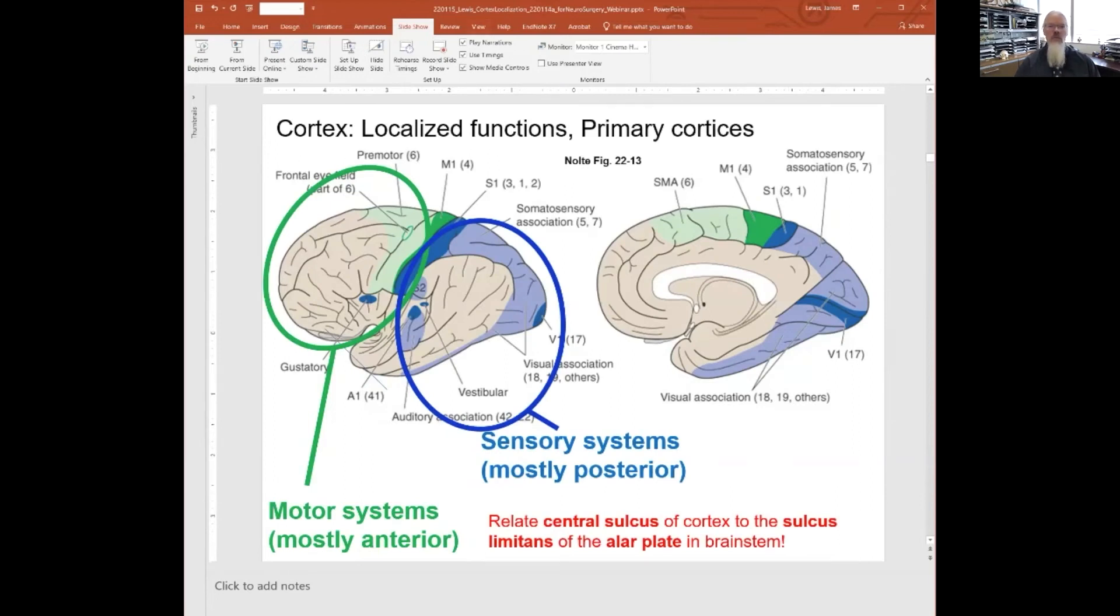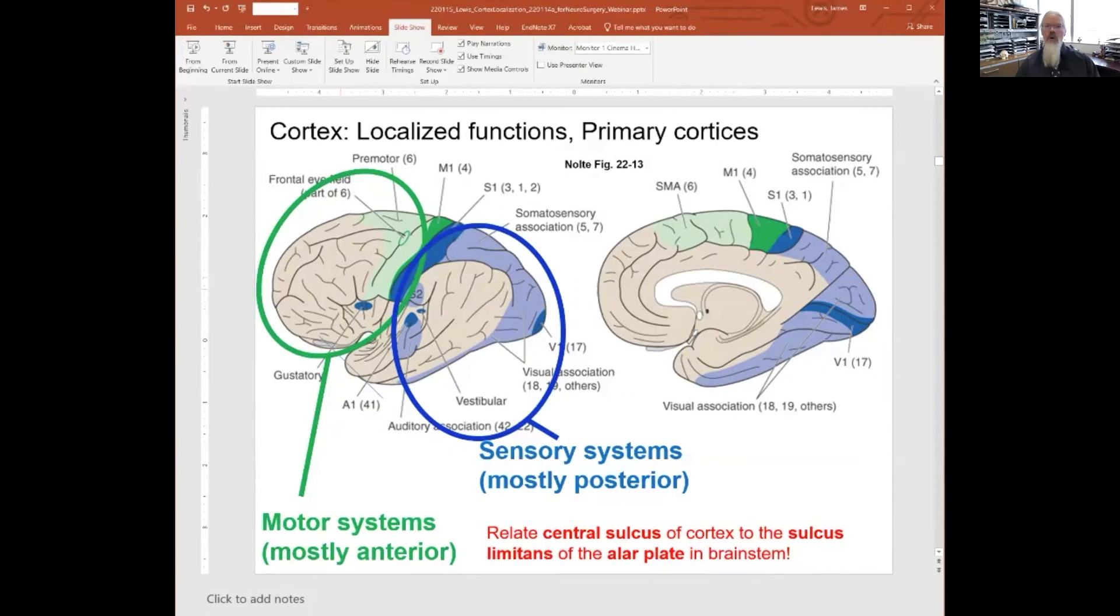The major thing to remember about brain organization is there's a nice division: sensory systems mostly in posterior portions, and motor systems mostly anterior to the central sulcus. This is similar to what we saw in the brainstem—the alar plate, sulcus limitans, with motor more medially and sensory more laterally. Here in cortex, we also have a rough division of motor more anteriorly and sensory more on the posterior surface.